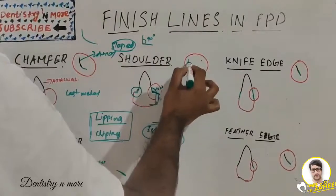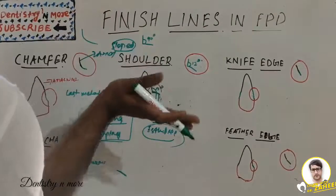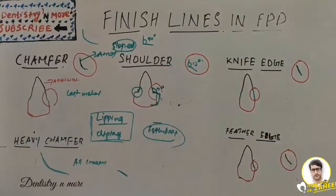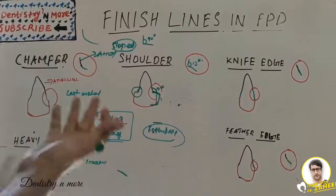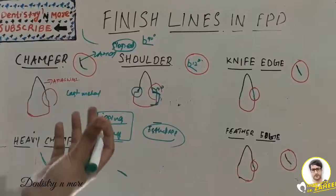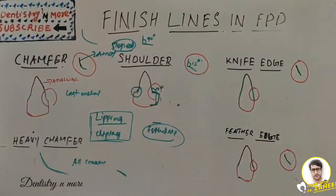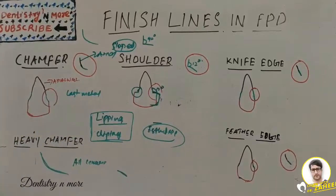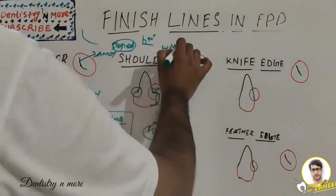The sloped shoulder is a modification of the shoulder where the 90-degree angle becomes 120 degrees. It can be used for facial margins of metal-ceramic crowns, with no unsupported enamel, and sufficient bulk to allow thinning of the metal framework for acceptable aesthetics. The radial shoulder is another modification — it has a 90-degree cavo-surface angle but with rounded internal angles, making it a shoulder with less sharp internal line angles.